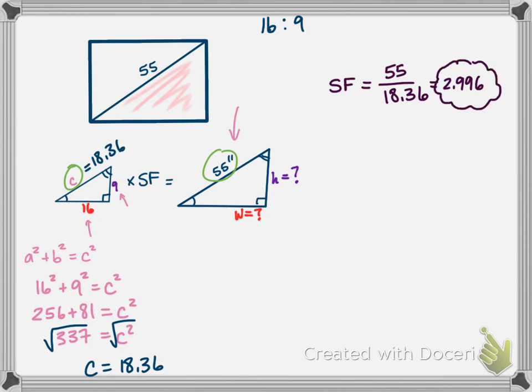Now all we have to do then is we take the sides that we know and we multiply them by our scale factor, and that'll give us the ones that we don't know. So our width is going to be our scale factor, 2.996, times what we do know, which is 16. If we multiply those, then we get 2.996 times 16 is 47.94. So then we know that our width here is 47.94 inches.